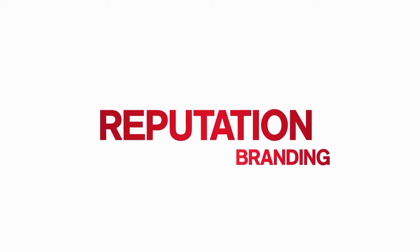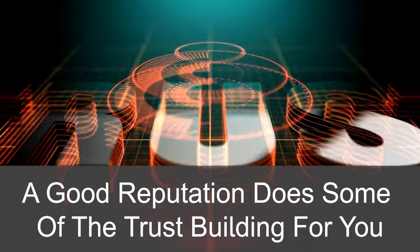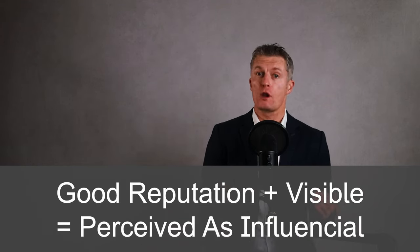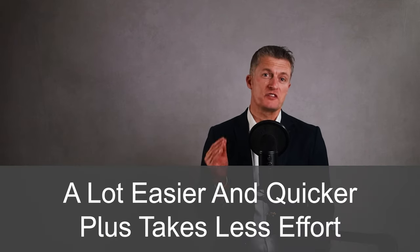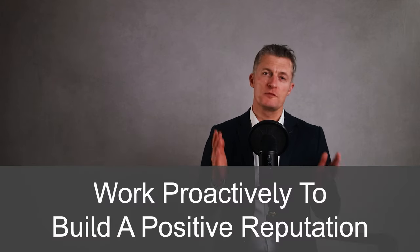The sixth key activity in managing workplace politics is to proactively work on your reputation. When you have a good reputation within a business, people pay more attention to you, are predisposed to being positive towards you, and are more likely to want to build a relationship with you. A good reputation does some of the trust building before you've even met the other person. When you have a good reputation and are visible within an organisation, you are more likely to be perceived as influential. The more influence you hold, the more other people will try to build relationships with you. All of this makes building relationships and navigating the politics within a company a lot easier. If you have a bad reputation — say if you're self-serving, difficult, unhelpful — then the opposite happens and building relationships and getting influence is very much an uphill battle. Work to proactively build a great positive reputation by implementing the many office politics tips shared today.